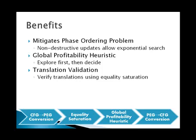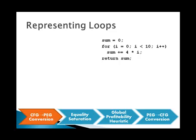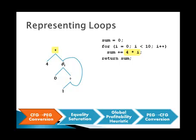Now that we have seen an overview of our approach, let's look at an example of performing optimization using our approach. Here we have a simple program which sums the first few multiples of 4. We first need to convert this program into our new representation, the challenge lying in representing the loops. We will focus on the expression 4 times i inside the loop. This translates into the multiply node and the corresponding PEG, representing the sequence of values 4 times i takes as the loop progresses. The theta node represents the sequence of values i takes as the loop progresses by combining an initialization of 0 and the fact that i is incremented by 1 in each iteration of the loop.